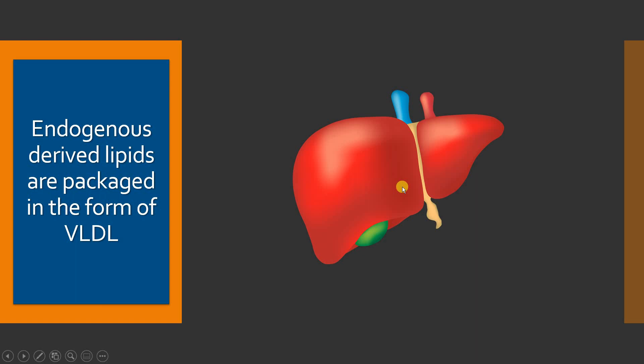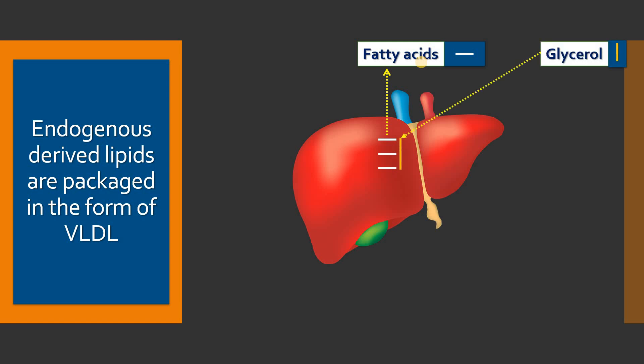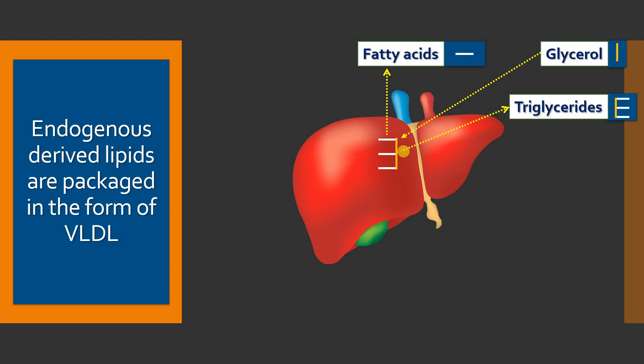The liver has the capacity to synthesize fatty acids through a pathway called de novo biosynthesis of fatty acids. As the liver synthesizes fatty acids, three fatty acids combine with glycerol — which can be released from hydrolysis of triglycerides or acquired from circulatory hydrolysis of lipoproteins by lipoprotein lipase — to give triacylglycerol or triglycerides. So, within the liver, whatever fatty acids are synthesized are converted to triacylglycerol or triglycerides.